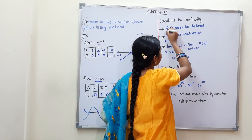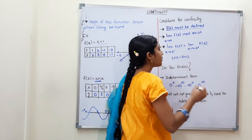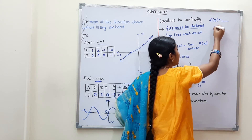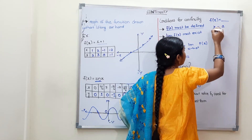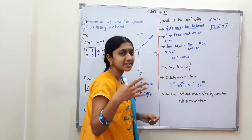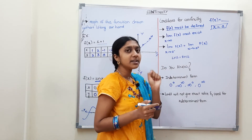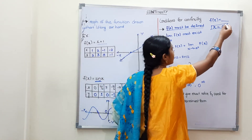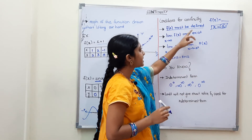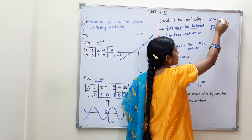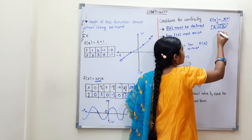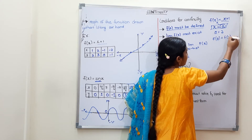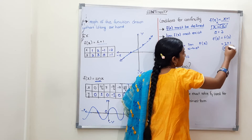The first condition: f must be defined at x = a. That means at any point — say x = 5 or x = 6 — f(a) must have a defined value. For example, for f(x) = x + 1 with a = 2, f(2) = 2 + 1 = 3. This is a defined value. That is the first condition.